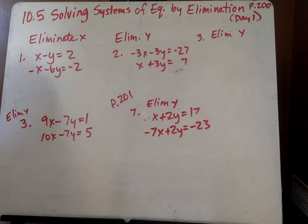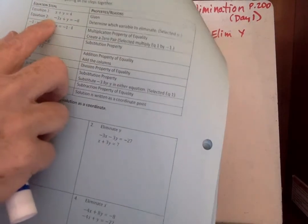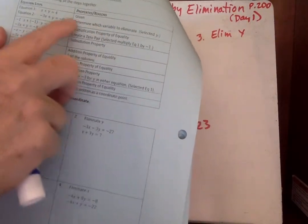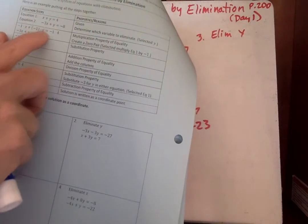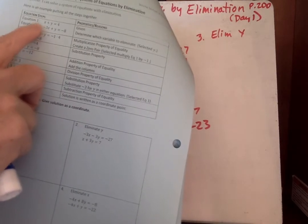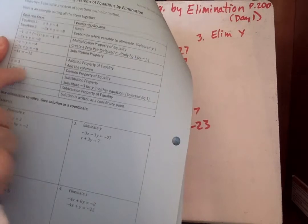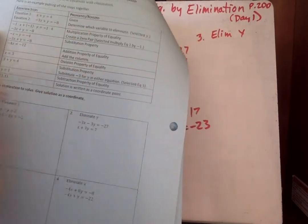And here's an example putting all the steps together. So we have equation 1 and equation 2 right here. First you have to determine which variable to eliminate. They have selected y because all you have to do is make one of those opposites. And you can multiply one of them by negative 1 and you get rid of the y's. So here's all the steps and here's all the reasons.